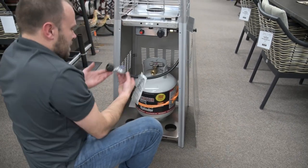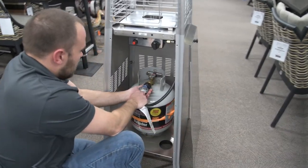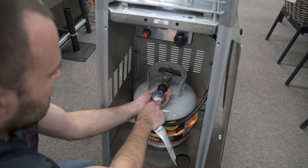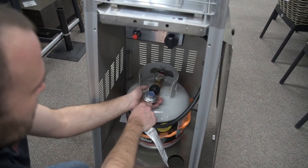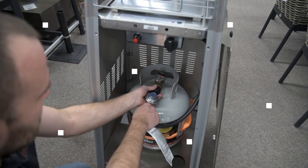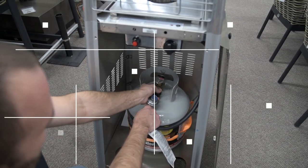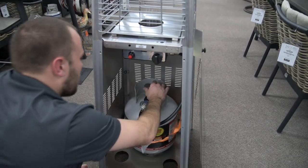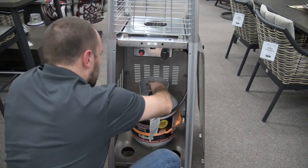Next we're going to take our regulator here. We're going to hook it right up to the front of the bottle and just start turning with our hands. You don't want to use any tools on these. As tight as you can get it with your bare hands. And then we're going to go ahead and open up our bottle here.